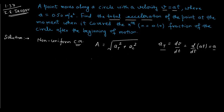The centripetal acceleration equals v squared divided by r, where r is the radius of the circle. Substituting v equals at, the centripetal acceleration becomes a squared t squared divided by r.